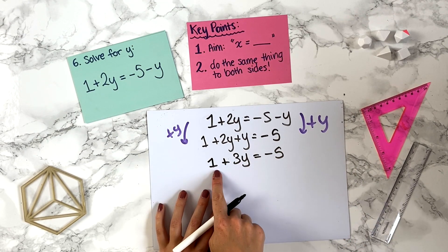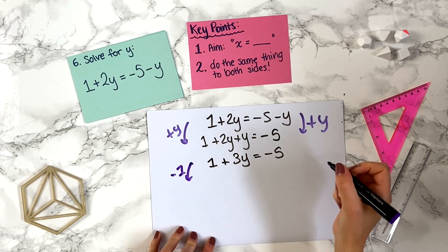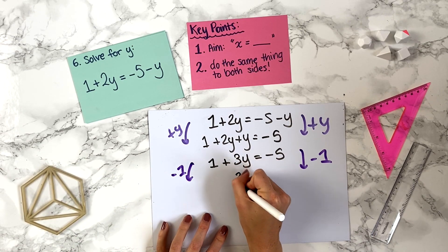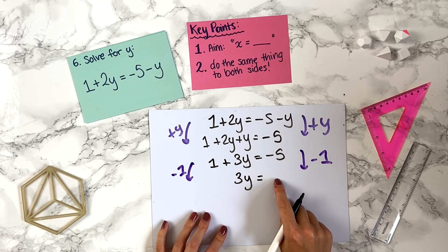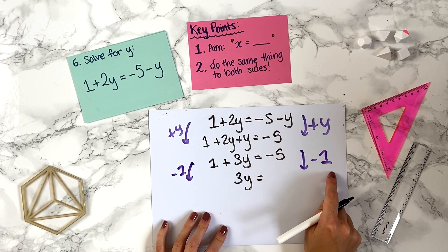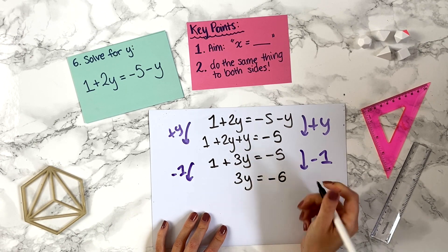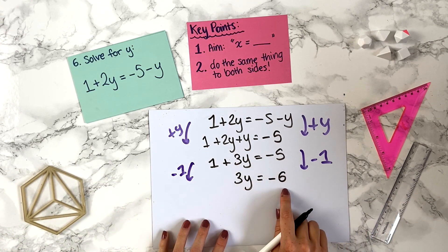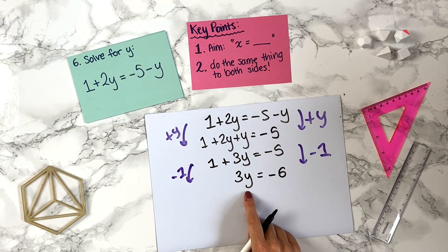We have a number on the left we want to move. To get rid of the 1, we minus 1 from both sides. 1 minus 1 goes to zero, so we just have 3y. On the right, minus 5 minus 1 is minus 6. So we have 3y equals minus 6. Now we want y on its own.